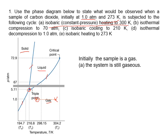Under isothermal compression, pressure increases — that's a vertical line — up to 70 atmospheres, which is somewhere here, and that enters the liquid region. The sample is now a liquid.